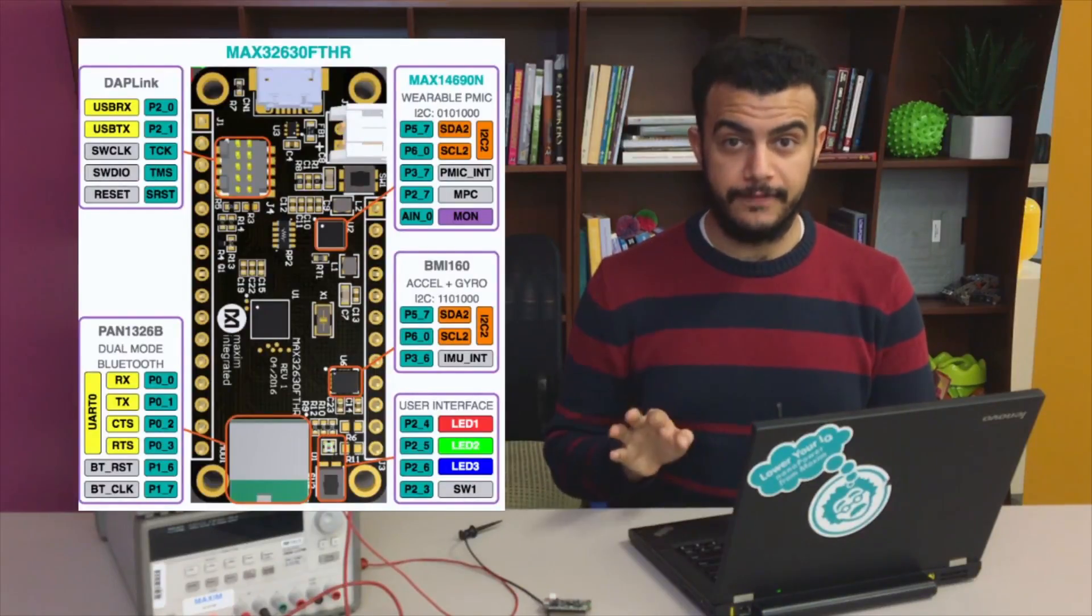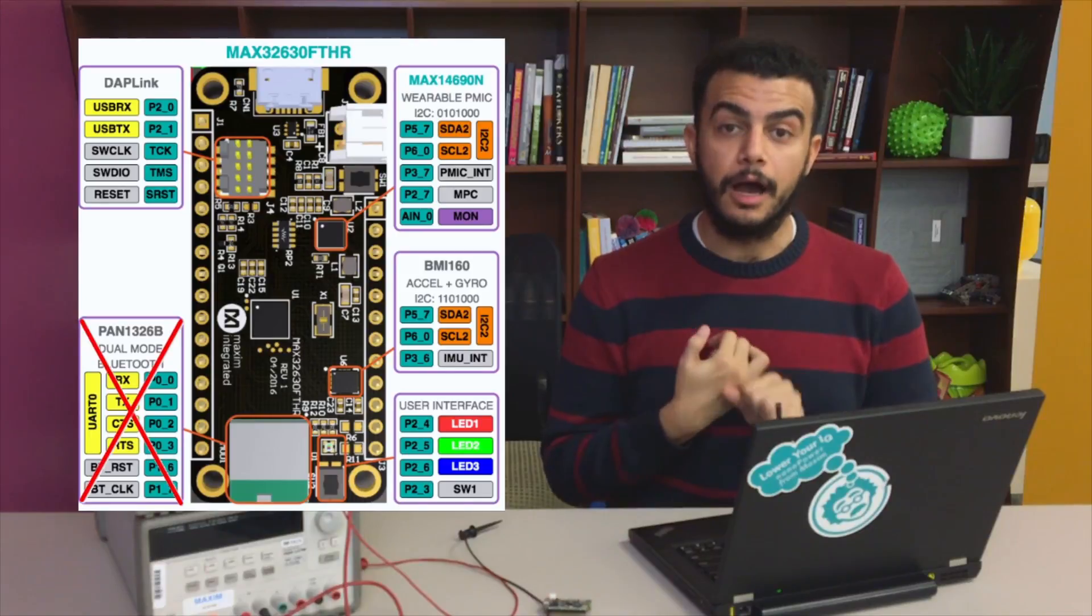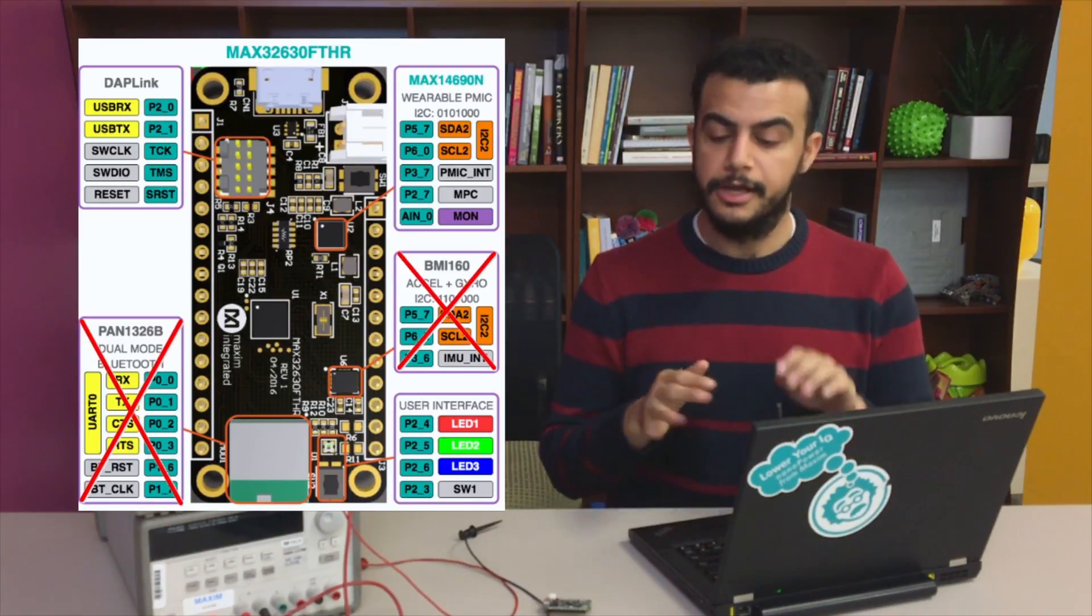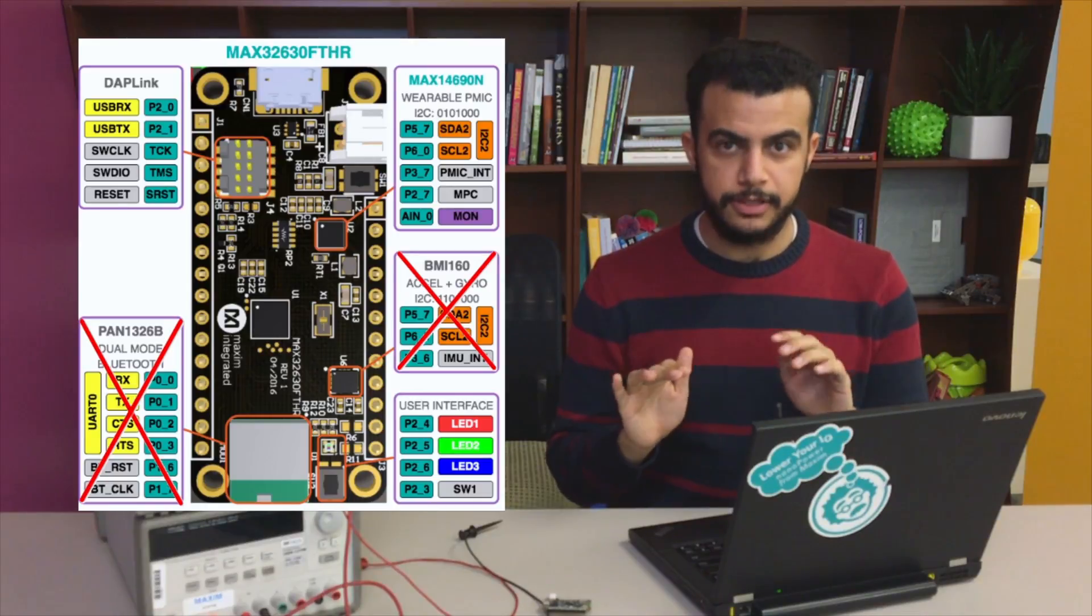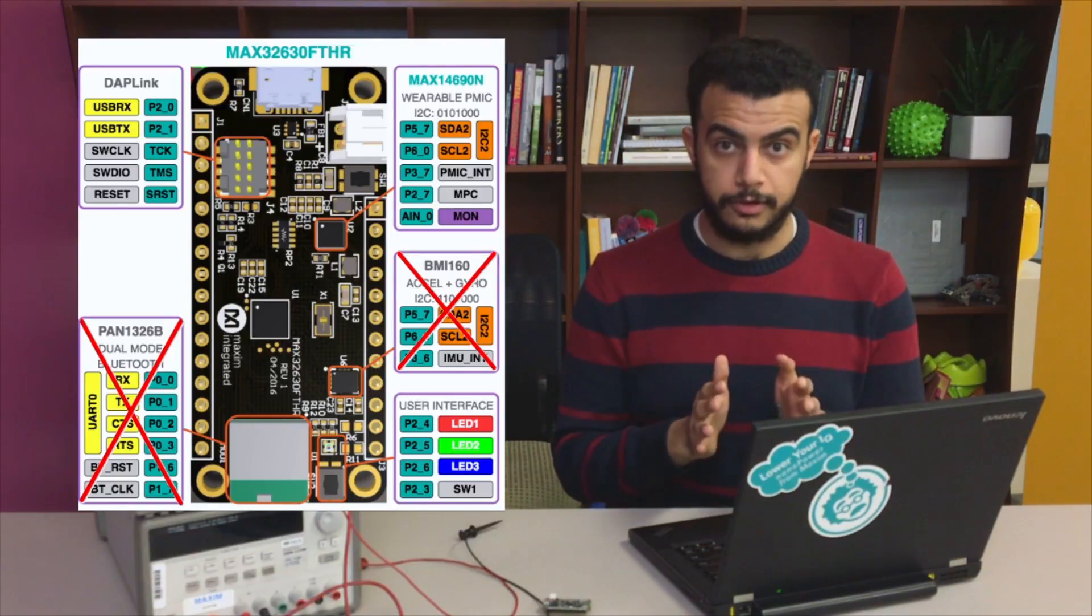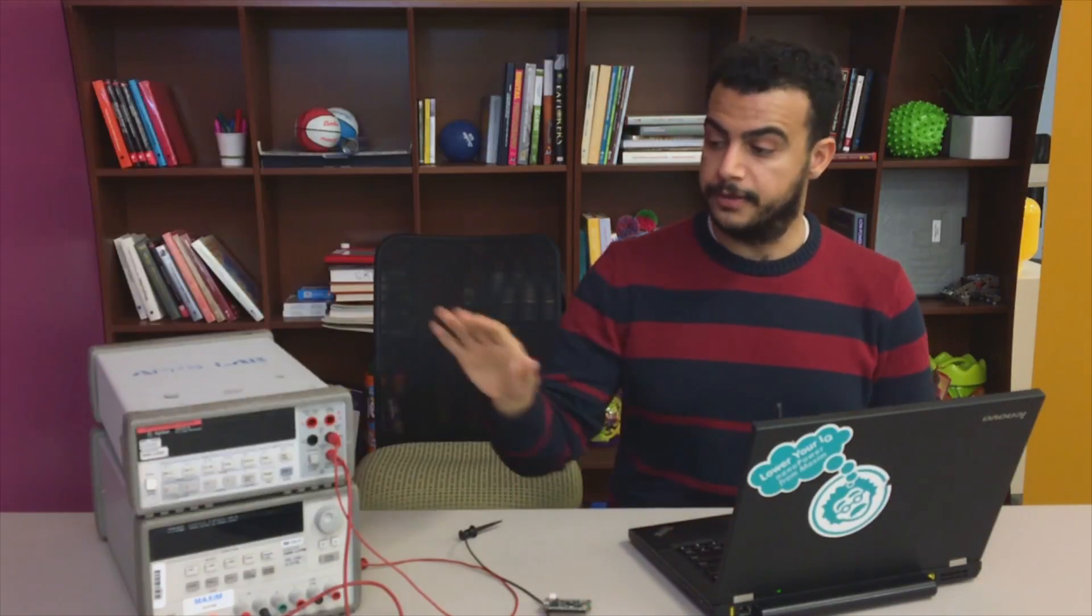For today's demo I'll be using the MAX32630 feather board but with a few modifications. I disconnected the onboard Bluetooth module and the onboard inertial sensor so I had the lowest power consumption and was just measuring the power management IC and the microcontroller itself. I'm expecting each to draw one to two microamps so hopefully that's what I'll see when I power on my ammeter.